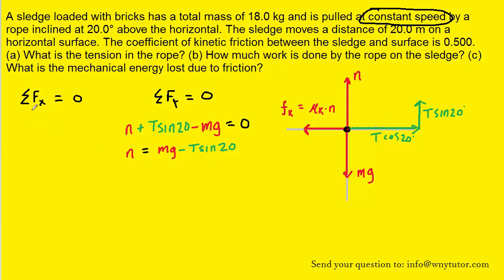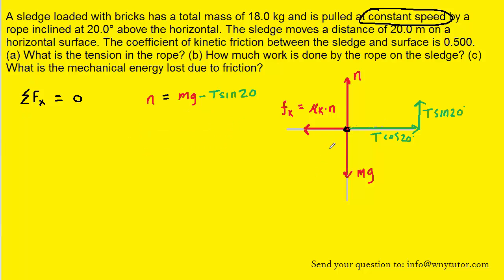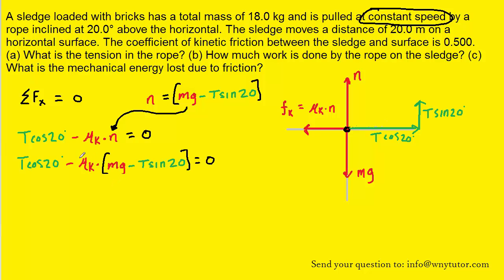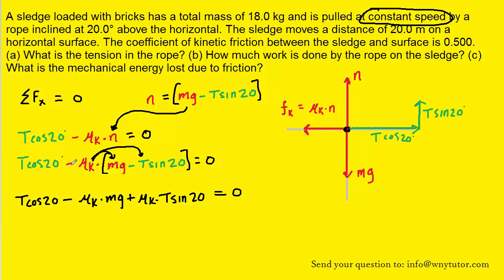Turning to the sum of forces in the x direction, there are only two forces: the positive T cosine 20° and the negative mu_k times the normal force. We can recall the expression we solved for the normal force and substitute it in for the normal force here. Then we distribute minus mu_k to both terms inside the brackets. Notice that when the negative sign is distributed to the second term, which was already negative, it becomes positive.